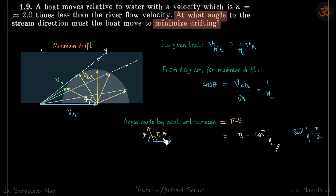Our answer is π minus cos inverse 1 by η. If you do some manipulation, this is the same as sin inverse 1 by η plus π by 2, which is given as the answer in the book, but this answer is also fine.